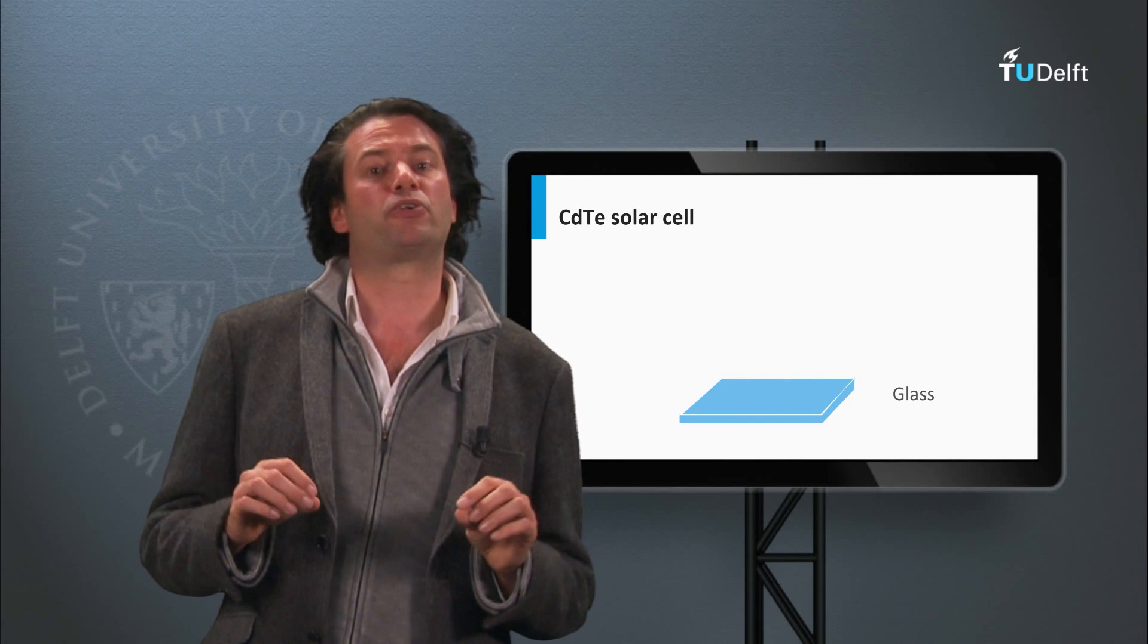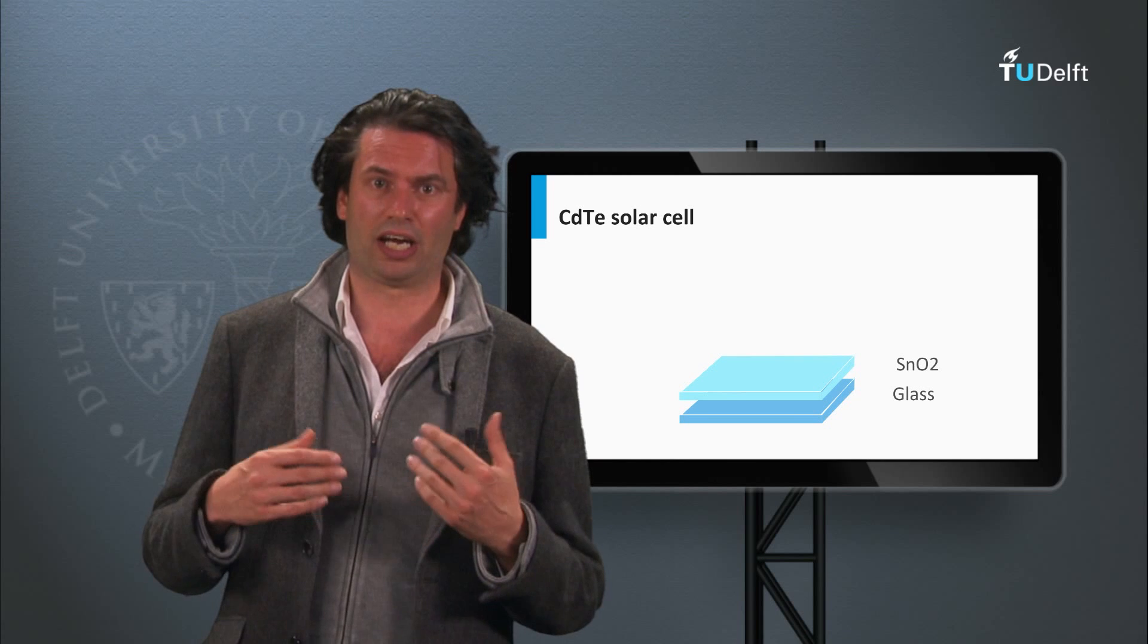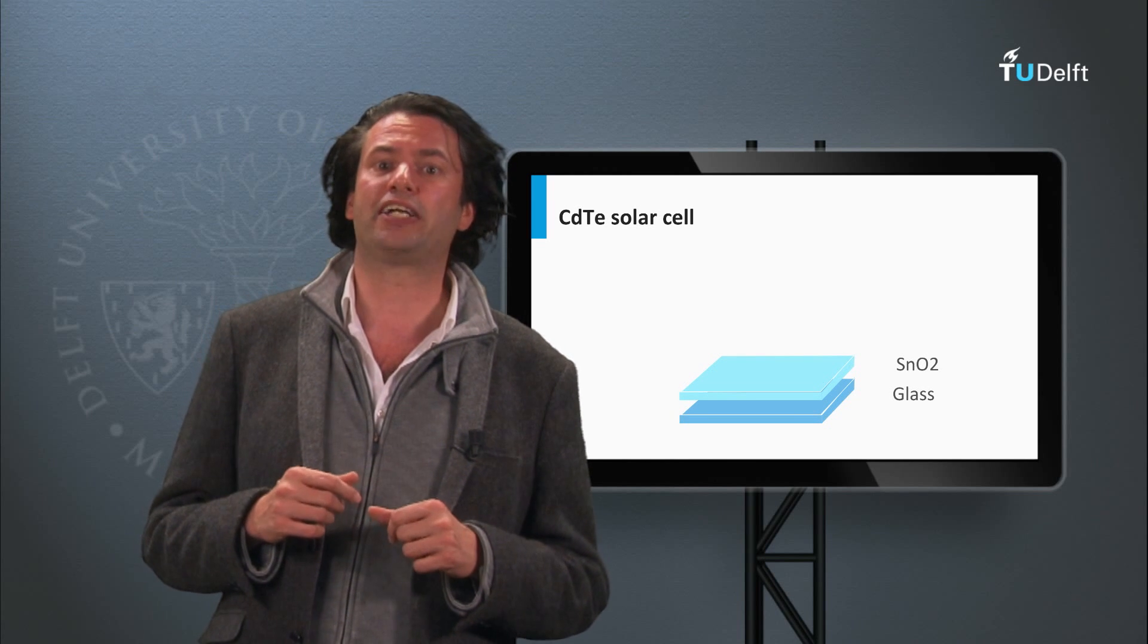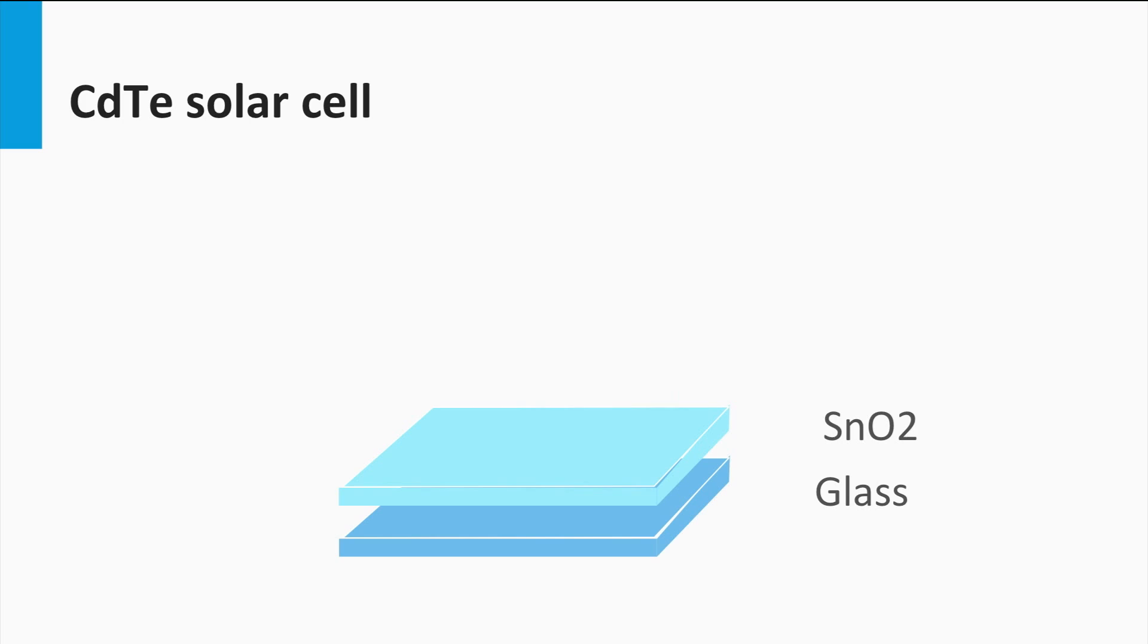The structure of a typical cadmium telluride solar cell looks like this. On glass, the transparent front contact is deposited. This can be tin oxide or cadmium stannate, which is cadmium tin oxide alloys. On top of that, the N-layer is deposited, which is a cadmium sulfide layer, similar to the N-buffer layer in CIGS solar cells.